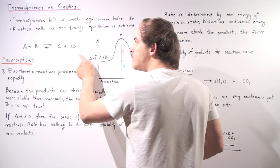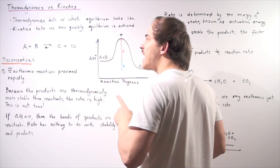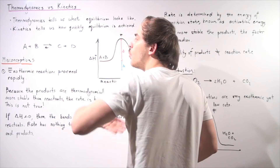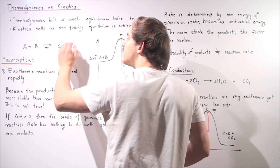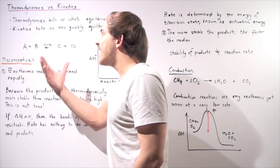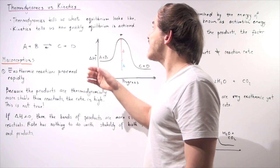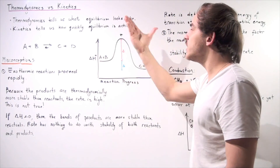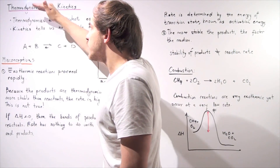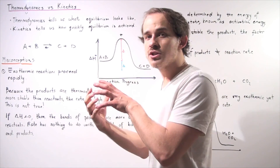If the products are more stable, our reaction is exothermic going this way, and that means a lot of the reactants A and B will be used up to produce a lot of C and D. Kinetics, on the other hand, does not talk about stability — kinetics talks about how quickly our equilibrium is achieved. There is a large difference between thermodynamics and kinetics, but people often confuse the two.